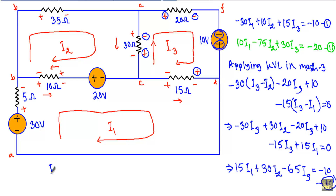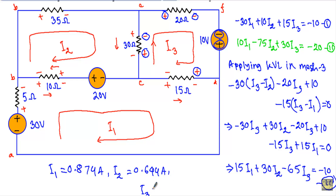Now if I solve equations 1, 2, and 3, I will get I1 = 0.874 ampere, I2 = 0.644 ampere, and I3 = 0.653 ampere. You will see the current flowing through the 35 ohm resistor will be equal to I2. So the current through the 35 ohm resistor equals 0.644 ampere.